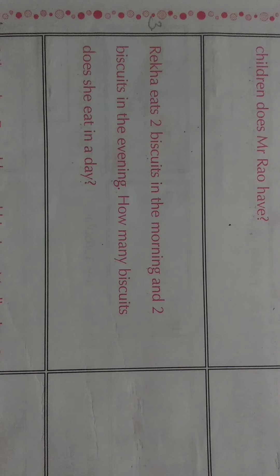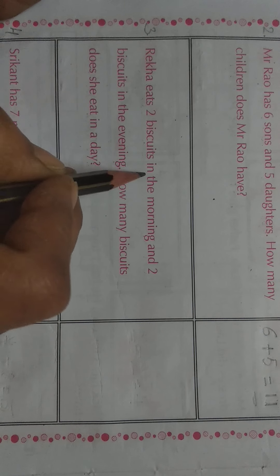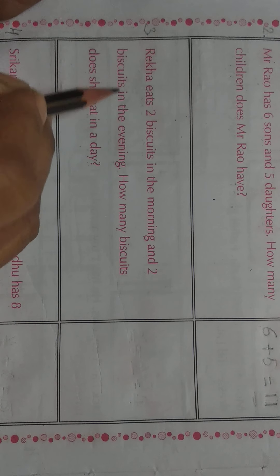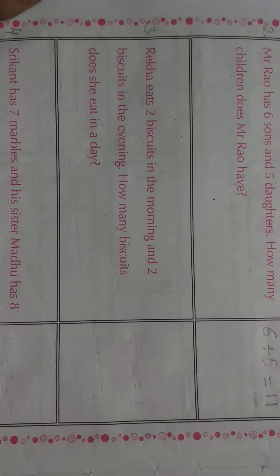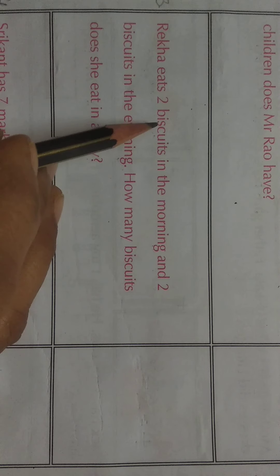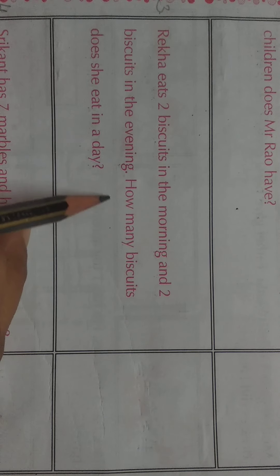Third one. Rekha eats 2 biscuits in the morning and 2 biscuits in the evening. Rekha morning two biscuits khati hai and evening two biscuits khati. It means kul milake kitne biscuits khati hai? 2 plus 2 is 4.